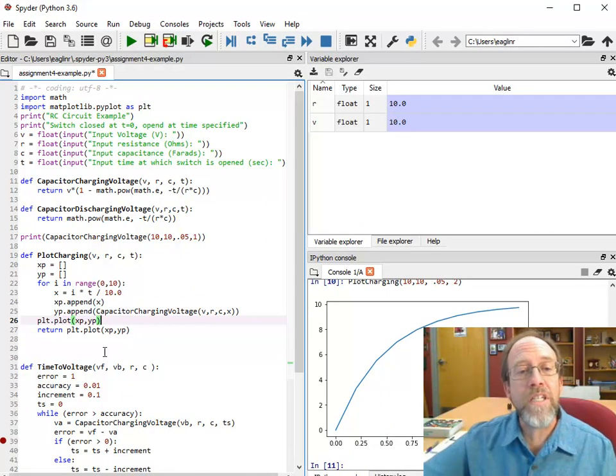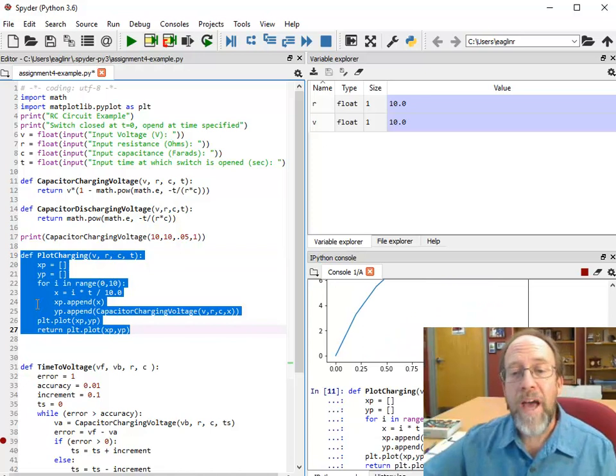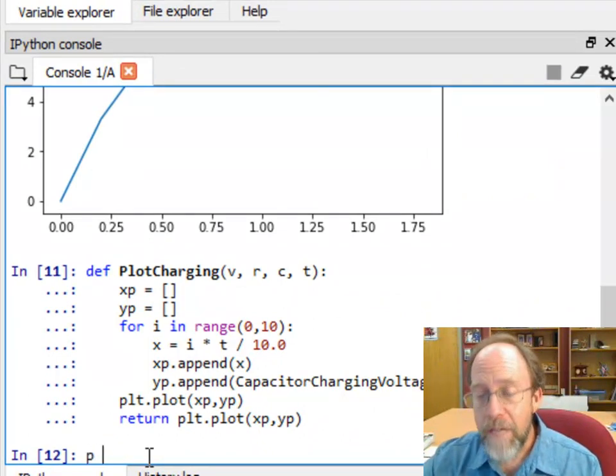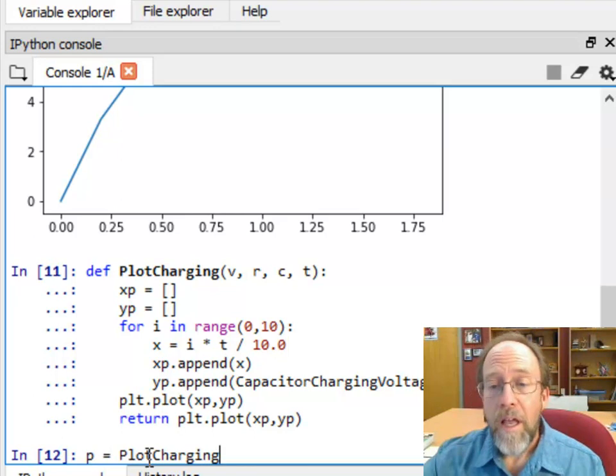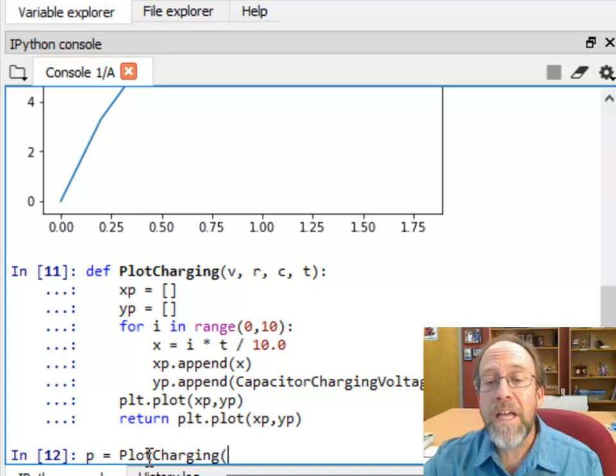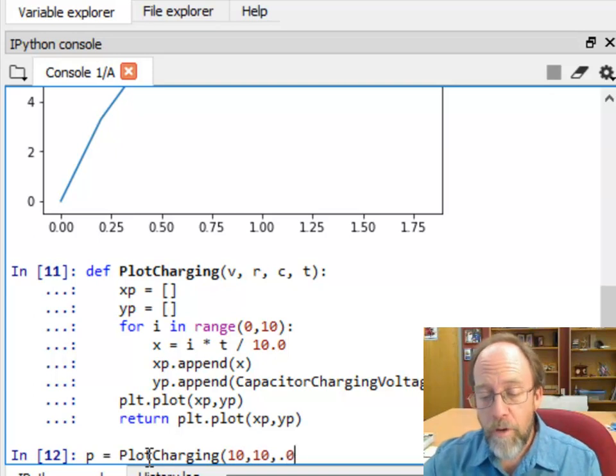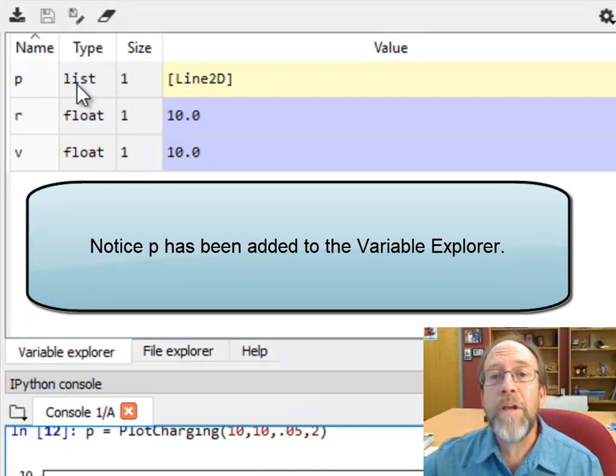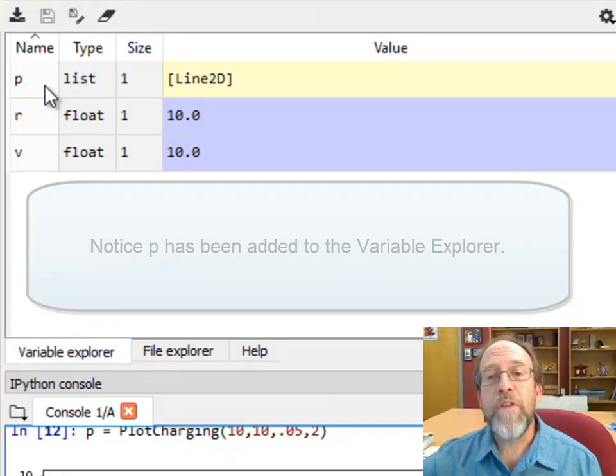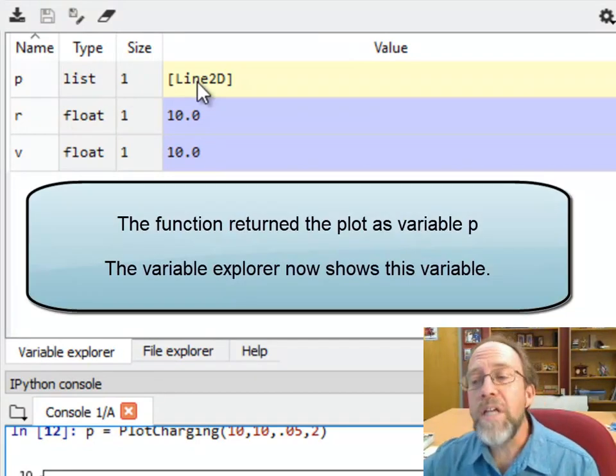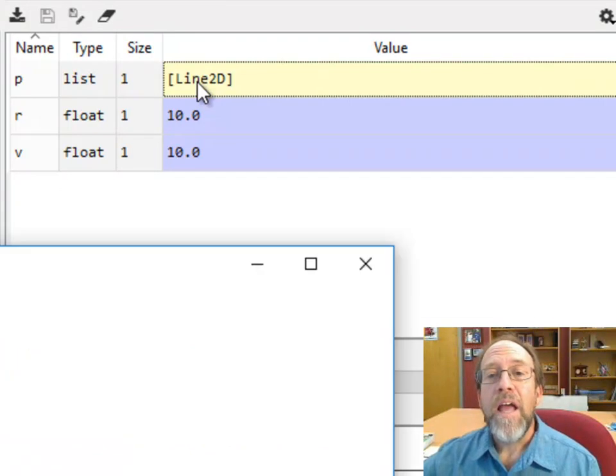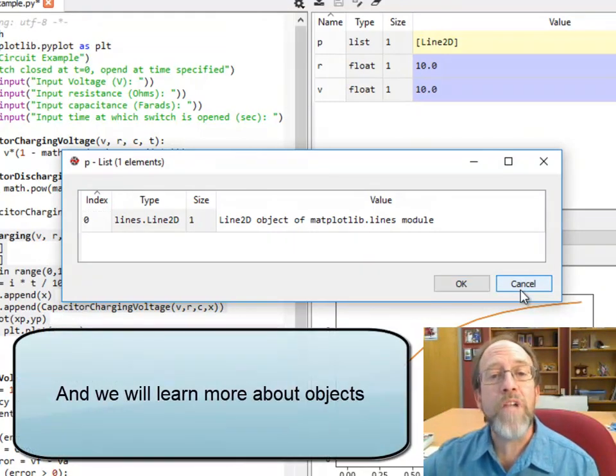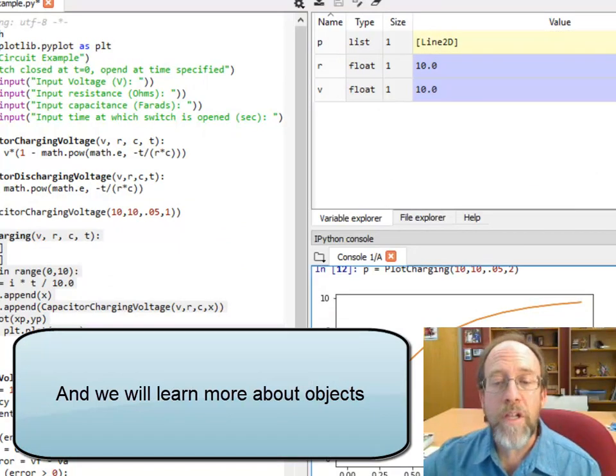Let's see what happens if I try to define this function with that return statement. Now it says it returned it. What if I said p equals PlotCharging and I'm going to call that with the same values I had before - 10, 10, 0.05, and 2. I get my plot there again. And now I should have a variable up here - you now see p is up here in the variable explorer as a list line 2d. So now I actually know what got returned from that. It's kind of nice because now I can see it's a line 2d object of matplotlib.lines module. So it's an object. I have that object to play with, so I could actually do other things with that object if I wanted to.